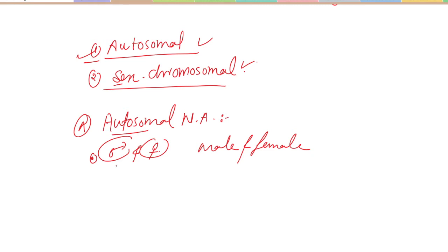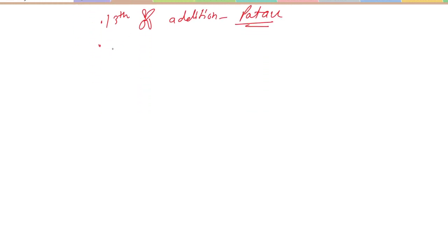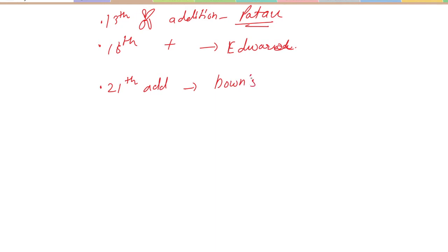Examples of autosomal numerical aberrations: if there is addition of the 13th chromosome, we call it Patau syndrome. If there is addition of the 18th chromosome, we call it Edwards syndrome. If there is addition of the 21st chromosome, we call it Down syndrome.